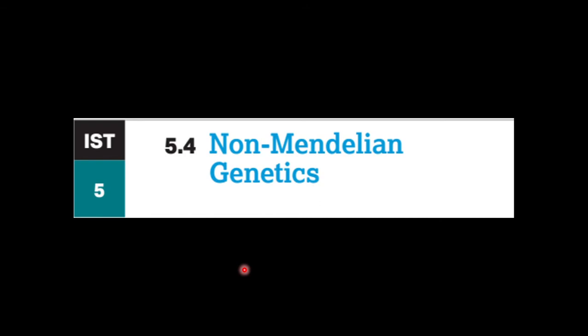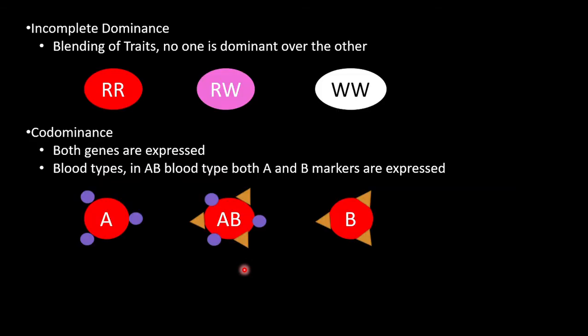Now on to non-Mendelian genetics. These are things that don't quite follow the Mendelian laws. Incomplete dominance is the blending of traits. Basically, no trait is dominant over the other. In these cases, the genotypes are different letters and are all capital. The genotype RR codes for the red trait while WW codes for white. The genotype RW will code for the blending of the two into pink.